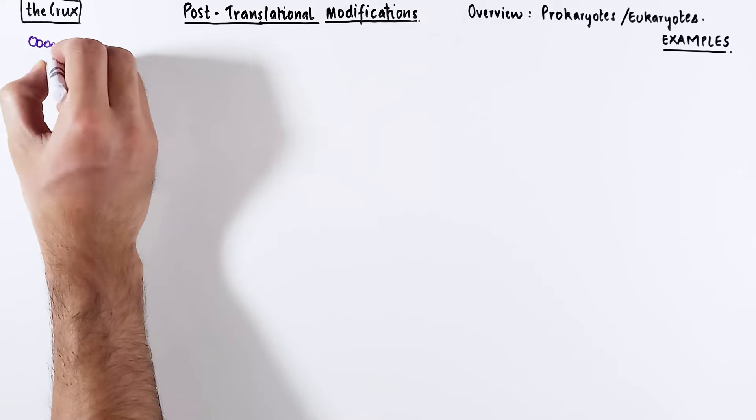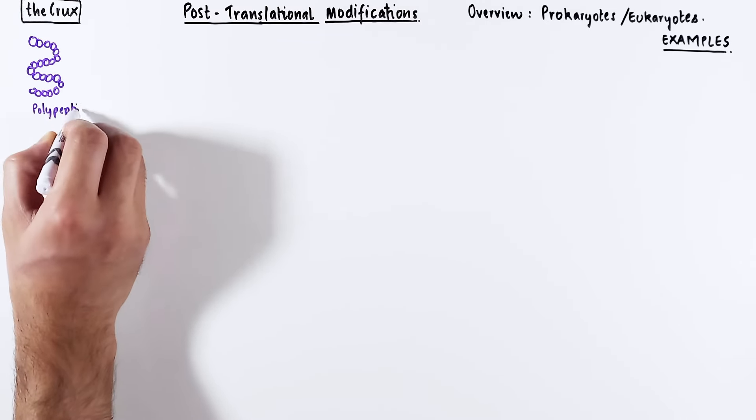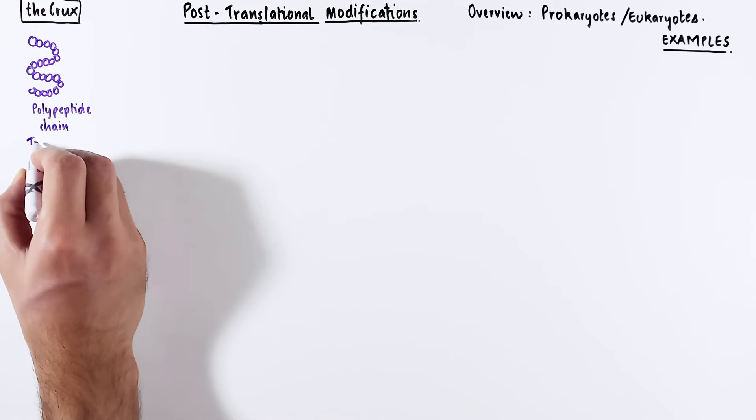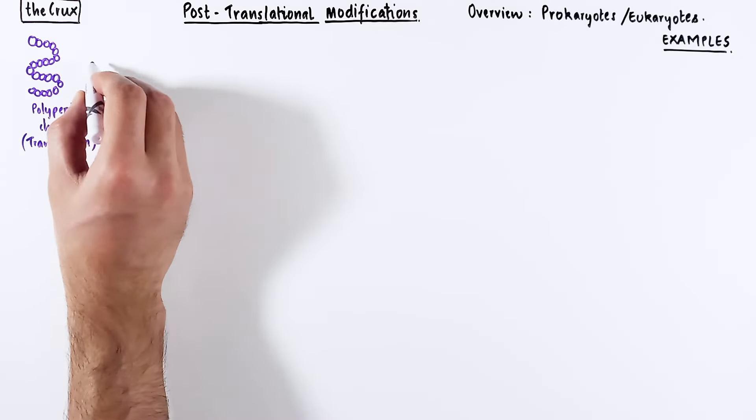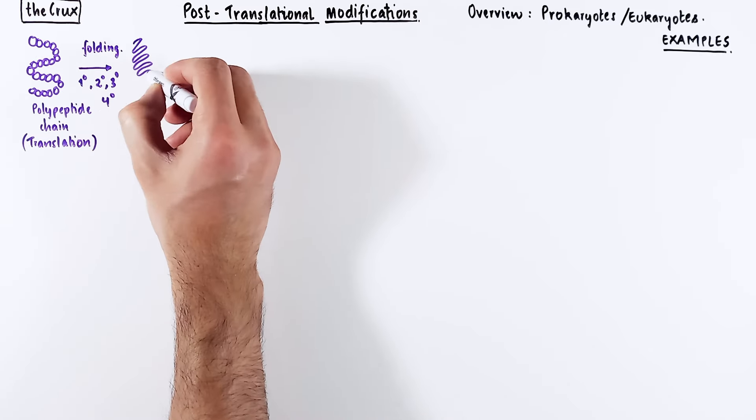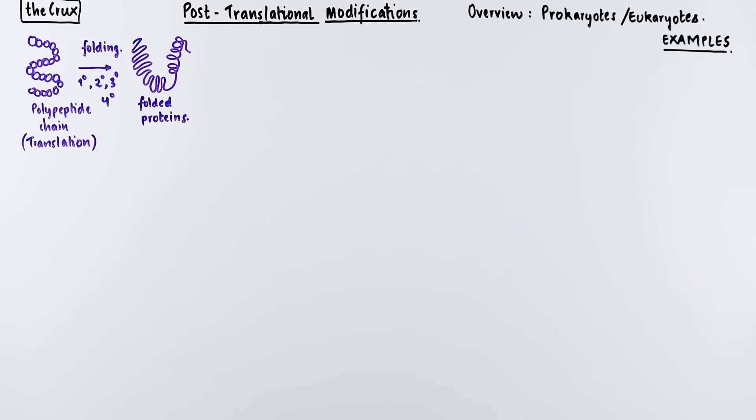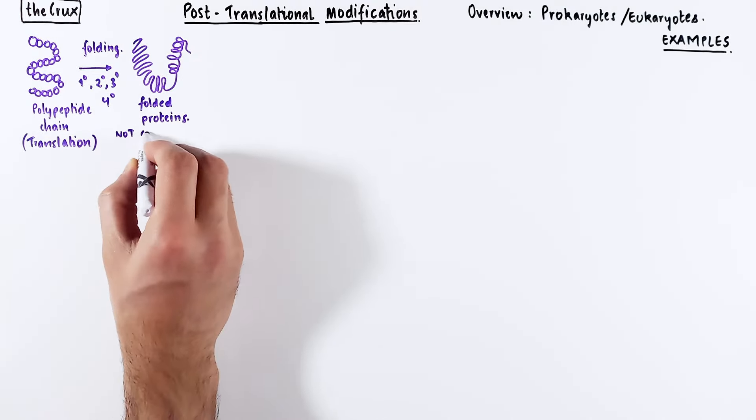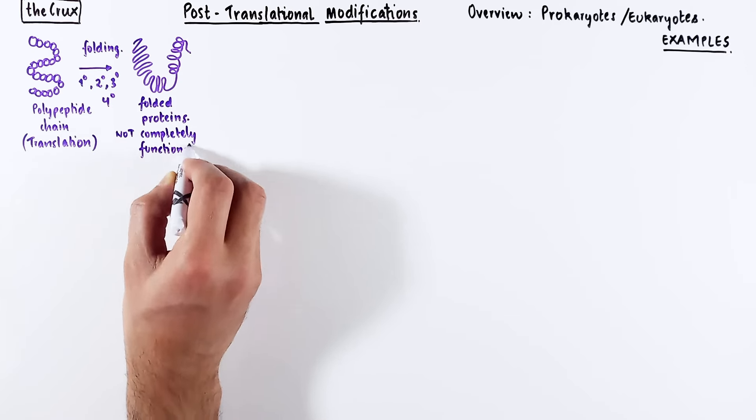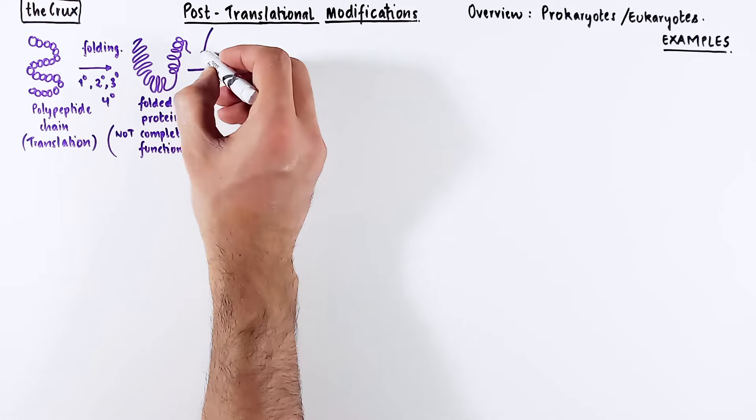After translation or protein synthesis, the polypeptide chain is not ready for performing its task. It first undergoes folding, assuming its primary, secondary, tertiary, or even quaternary structure. After folding, it may still not be completely functional. So additional help is required, which comes in the form of post-translational modifications.